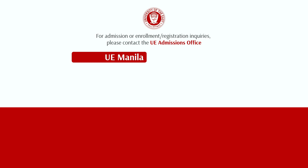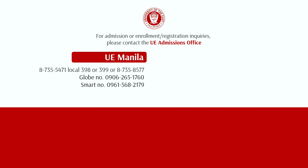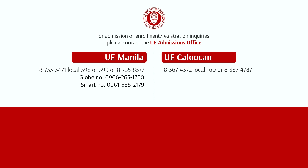For UE Manila, you may call the following landline numbers: 873-554-71 local 398 or 399, or 873-585-77. You may also contact the following mobile numbers: 0906-265-1760 for Globe and 0961-568-2179 for Smart. For UE Caloocan, you may call the following landline numbers: 836-7457-2 local 160 or 836-74787. You may also contact the following mobile numbers: 0936-904-3152 for Globe and 0921-927-1537 for Smart.